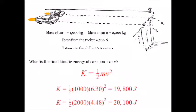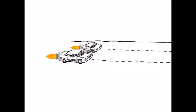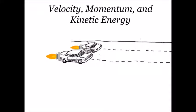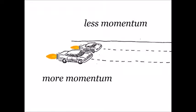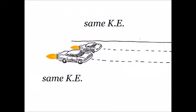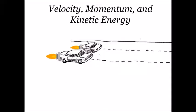Rounding — necessary but dangerous. Both cars end up with the same 20,000 joules. Summing it all up: the little car had the greater velocity, the bigger car had the greater momentum, and both cars have the same kinetic energy. Velocity, momentum, and kinetic energy are all related, but they are all different. Our focus, however, is on work.